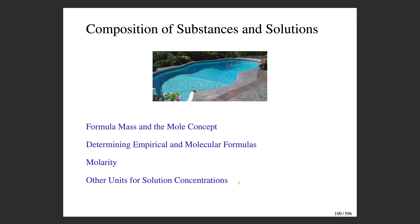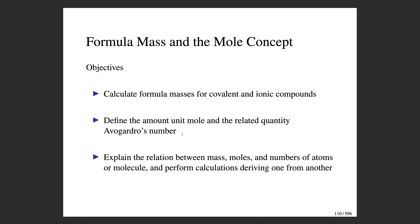In this first section, we will discuss the formula mass of a substance, and we'll introduce the idea of a mole. We want to learn how to calculate formula masses, and then we will introduce the idea of a mole of some compound. A mole is a counting unit, much like the unit of a dozen. For example, a dozen eggs equals 12 eggs. The mole provides us with a way of counting in chemistry when we have a very large number of molecules or atoms.